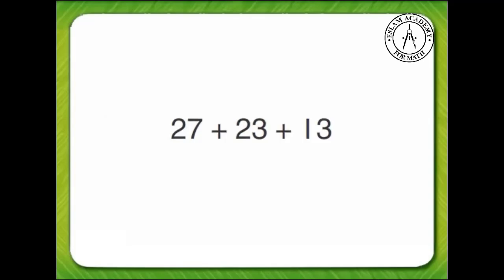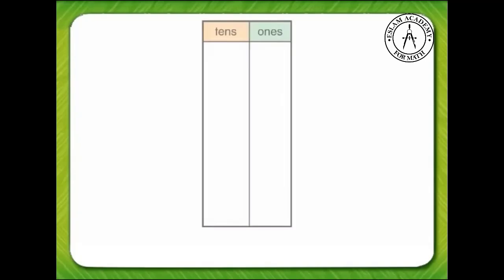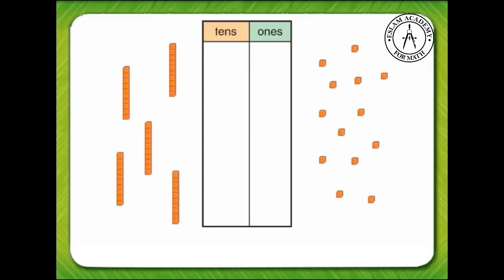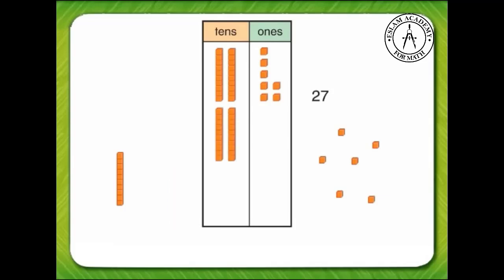First, let's set up the problem using the 10s and 1s place value chart and base 10 blocks. 27 has two 10s and seven 1s. 23 has two 10s and three 1s. 13 has one 10 and three 1s.